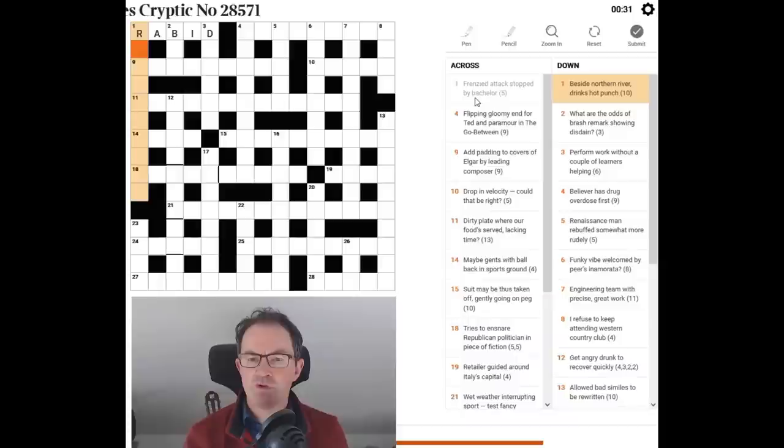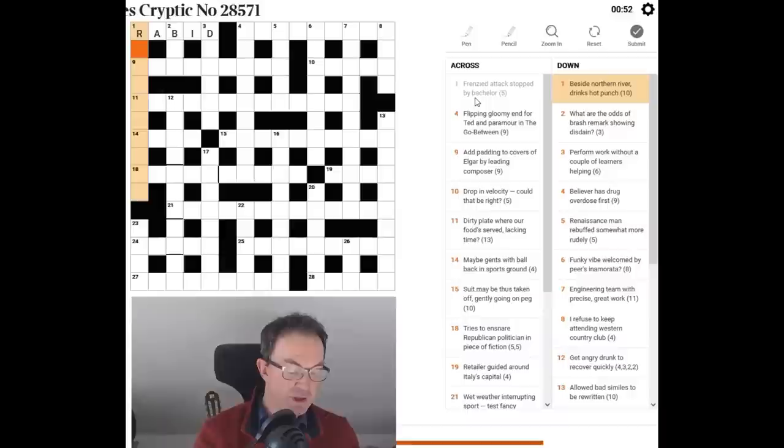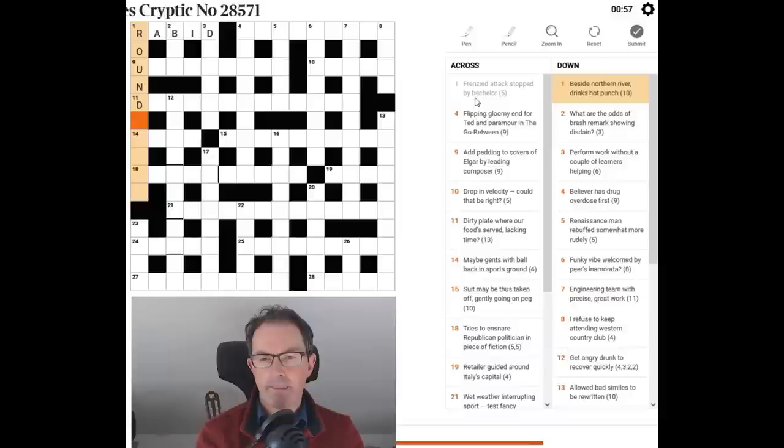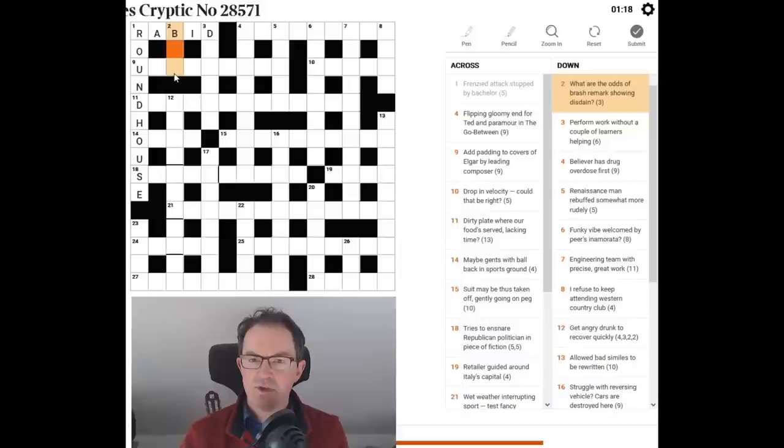Now we've got some starting letters. So beside Northern River, beside Northern River drinks hot punch. So if you buy a round of drinks you buy, if you buy a round, you're buying drinks plural. So we've got round and H. H is a valid abbreviation for hot because you might see that on a tap. And then North, and then it's Northern River for the river ooze. So we get round house.